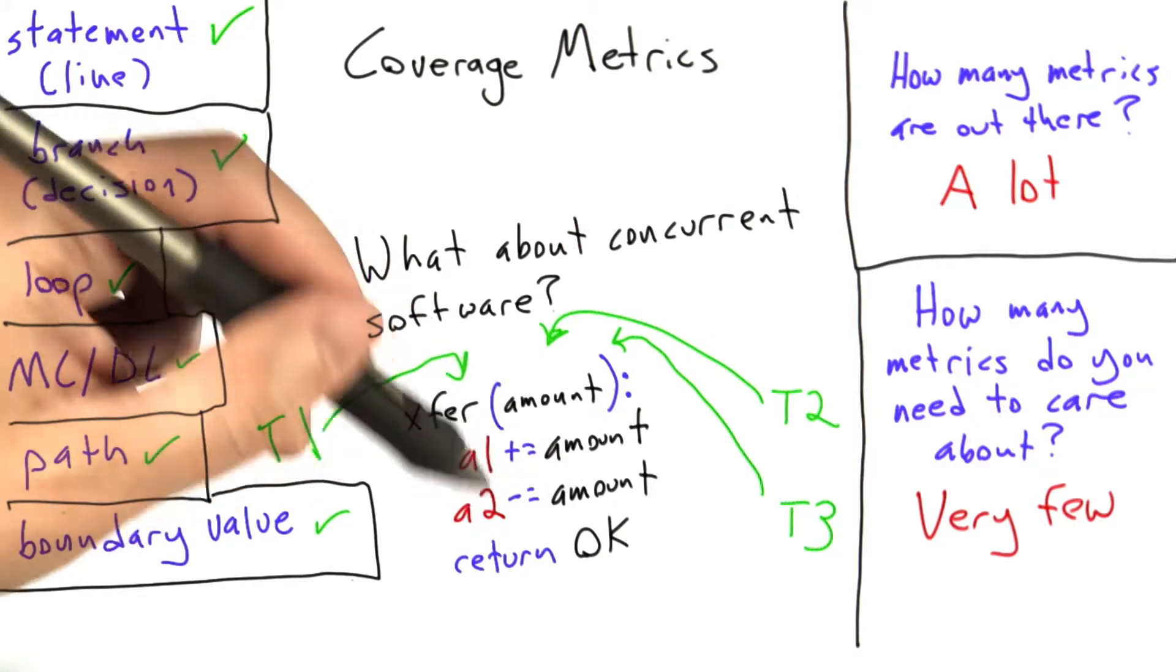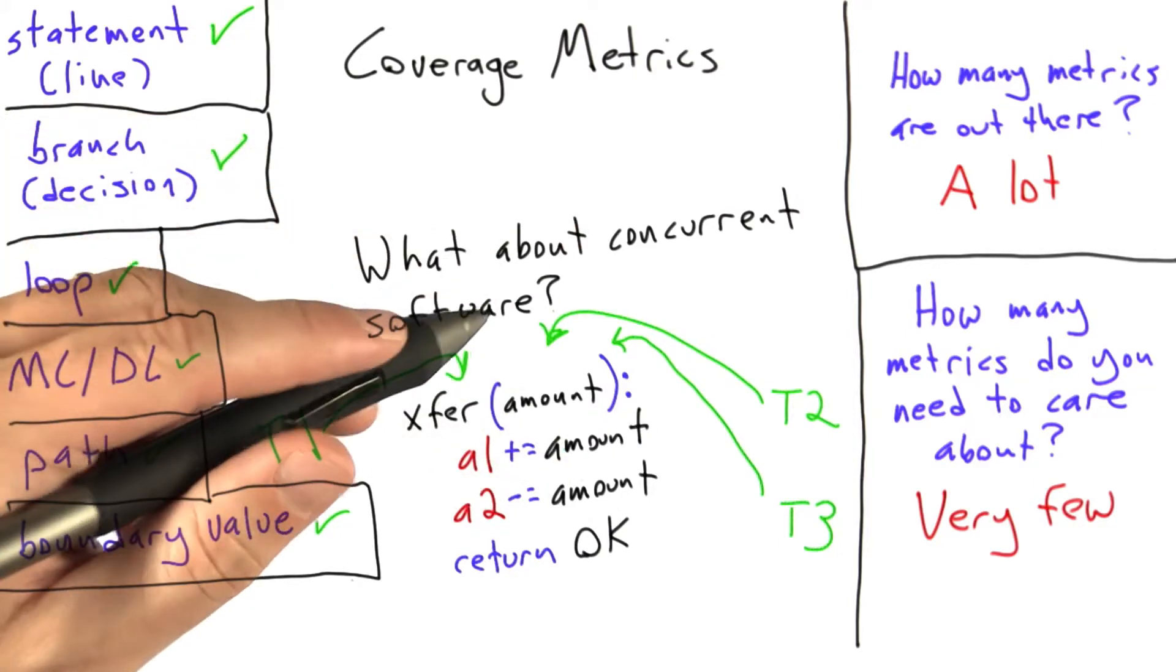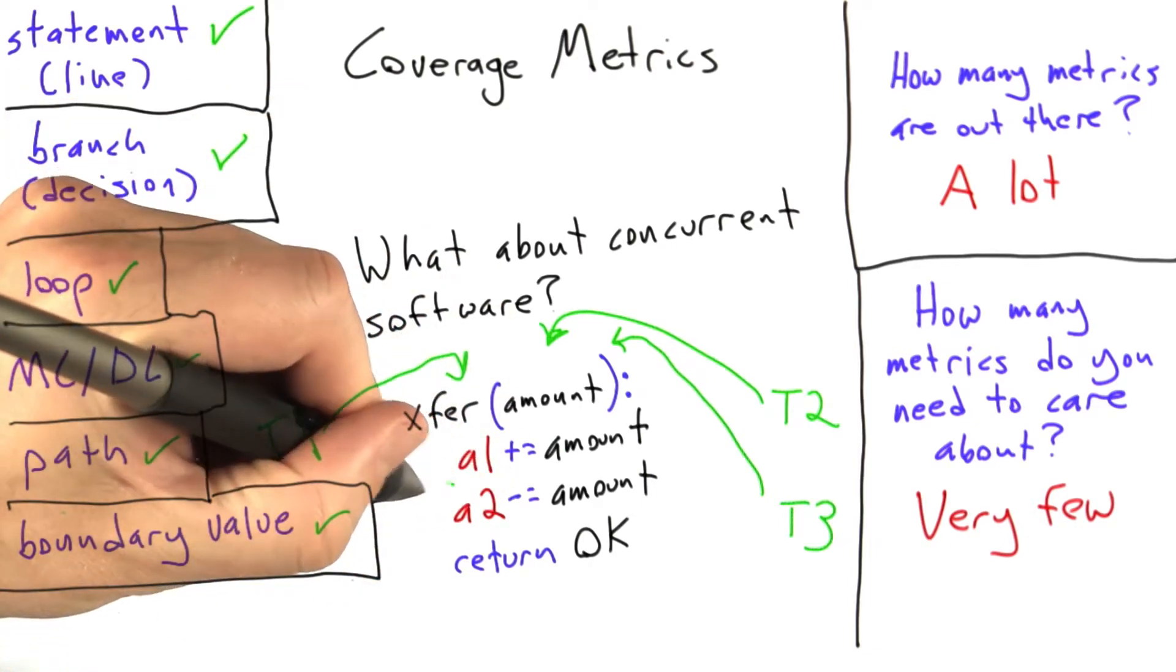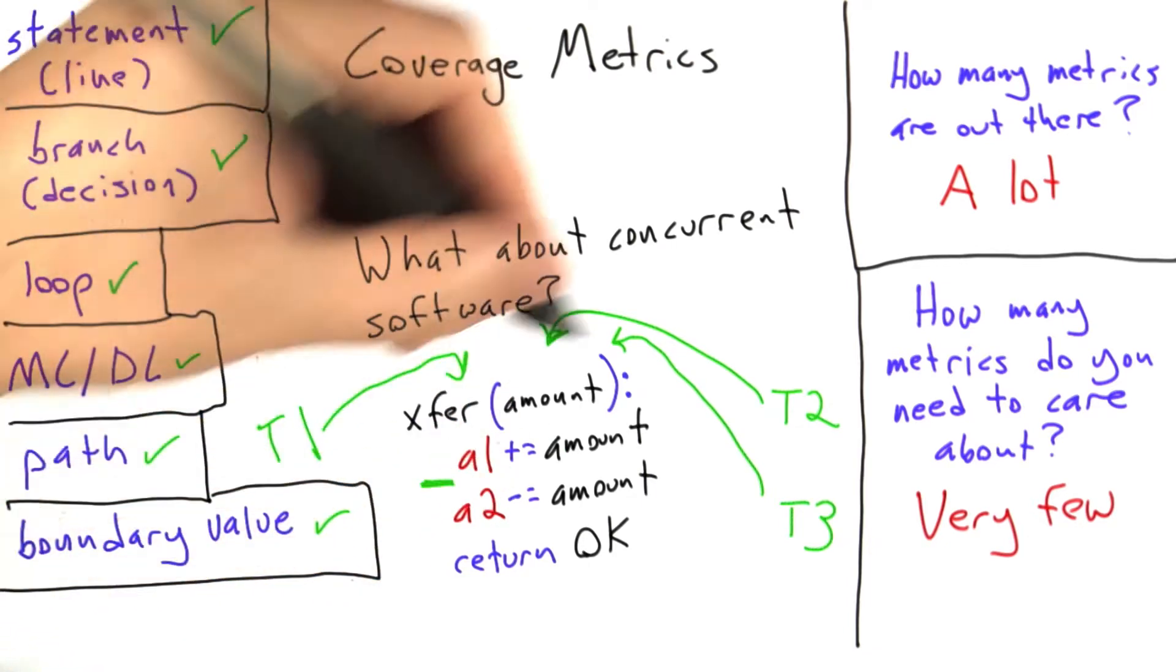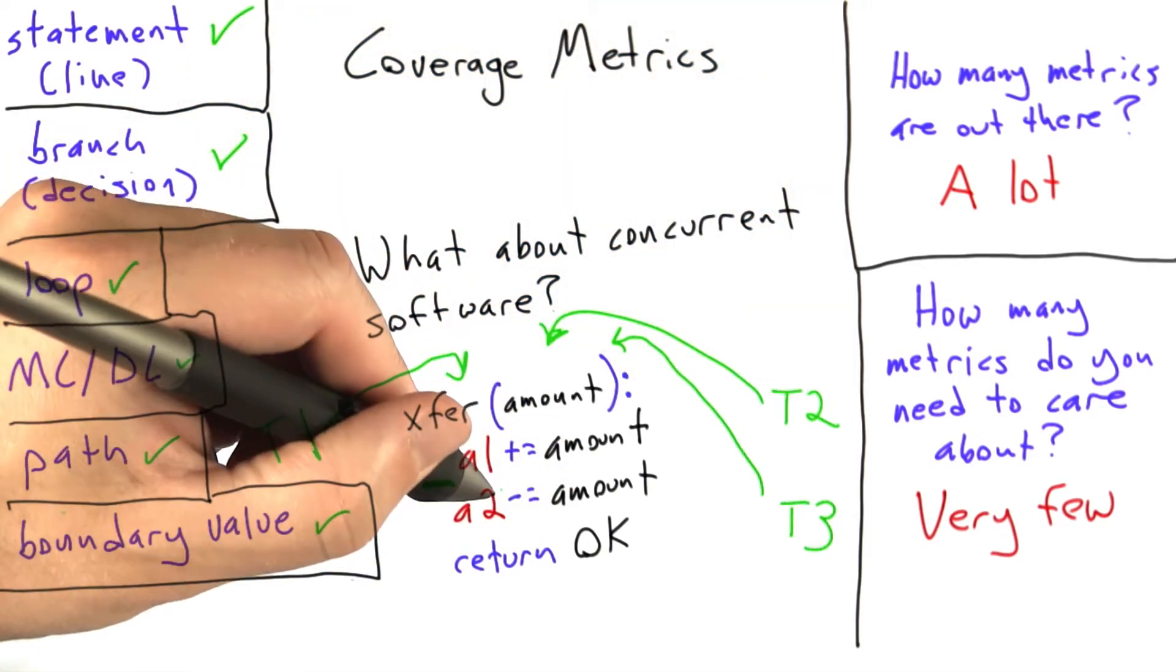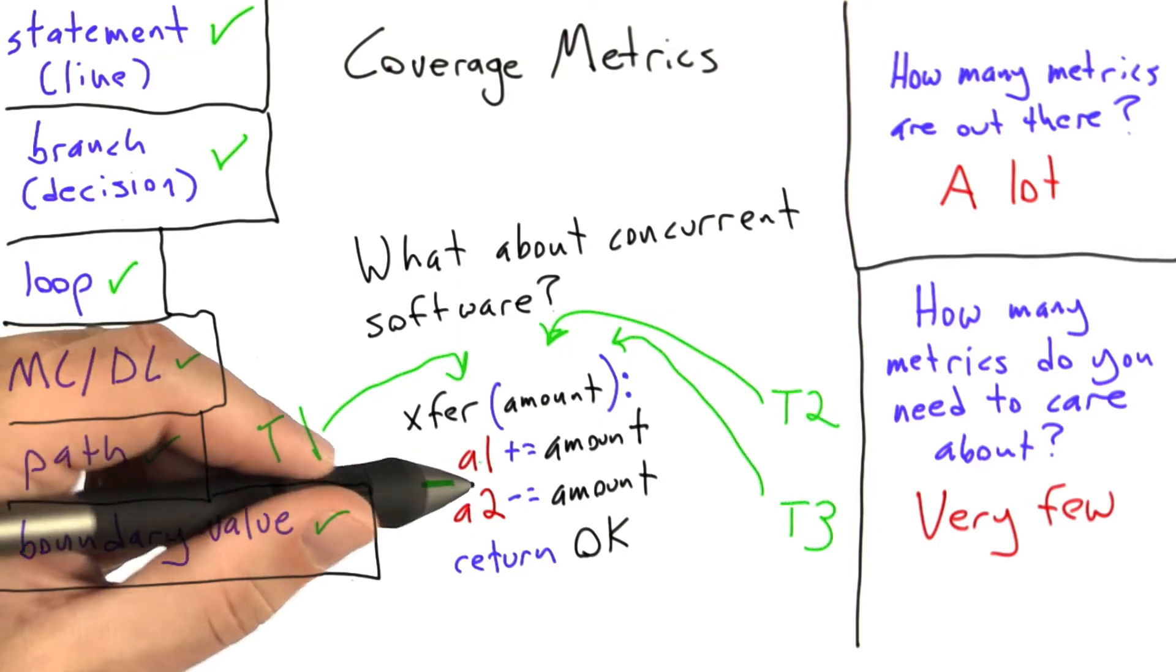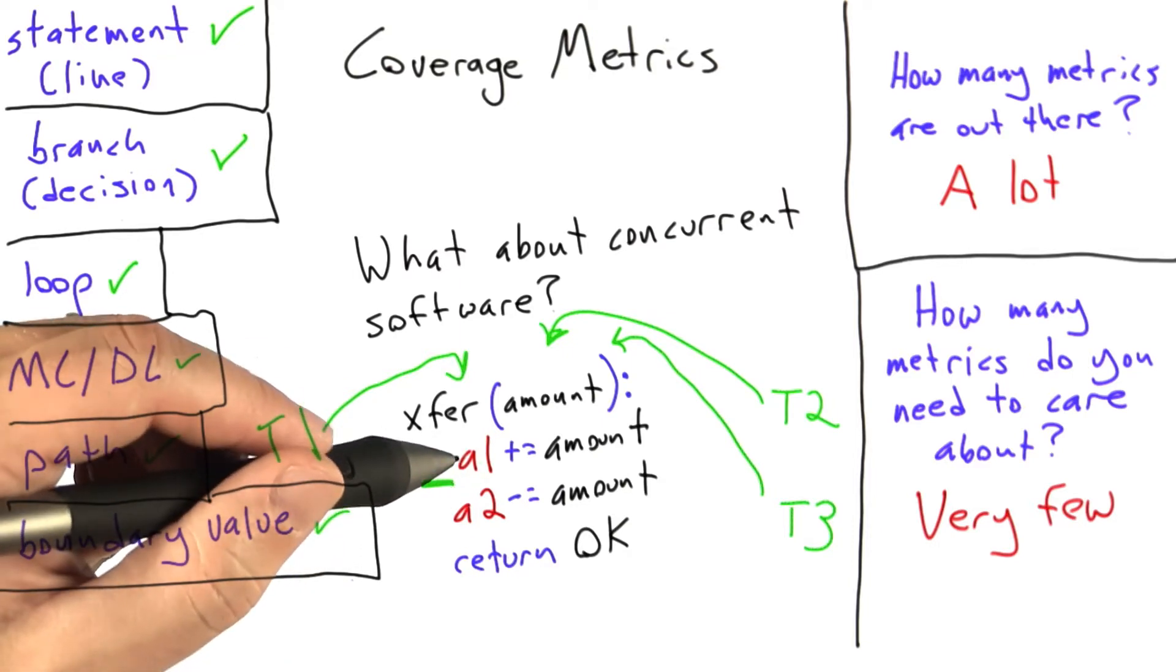So the coverage would essentially be T1 gets part way into the function, and then let's say it stops running. The processor then starts to run T2, which operates on the accounts and then completes, and then this interleaving of actions between the different threads would be what would constitute a unit of test coverage.